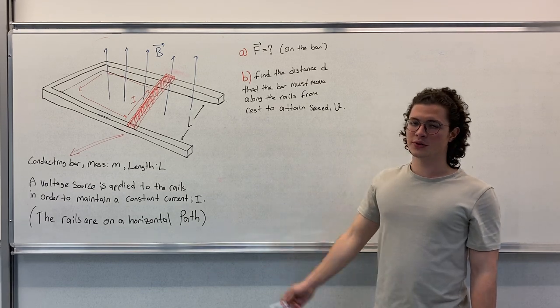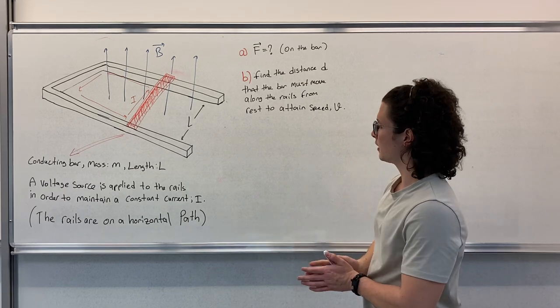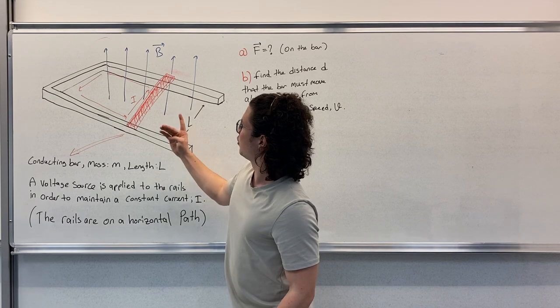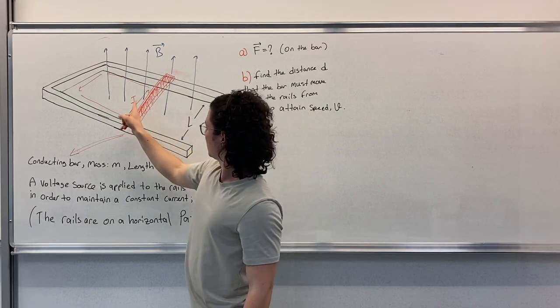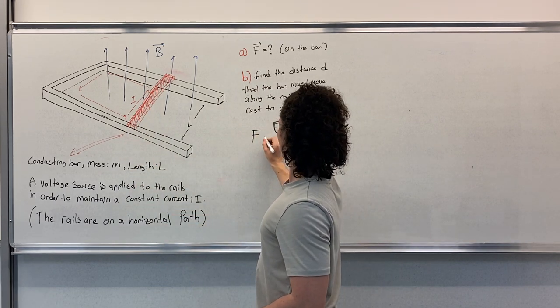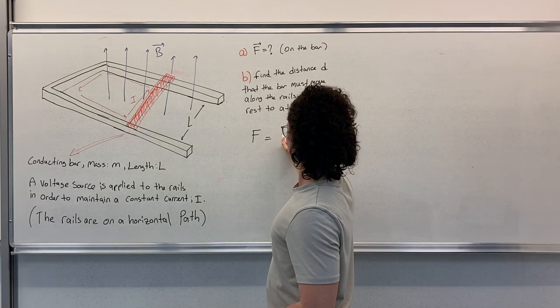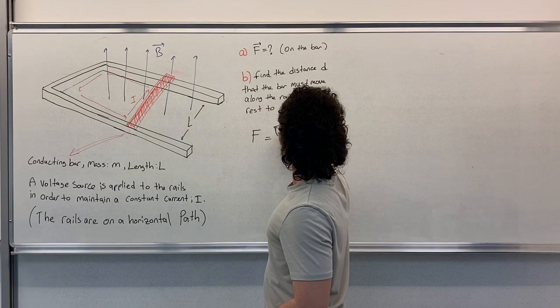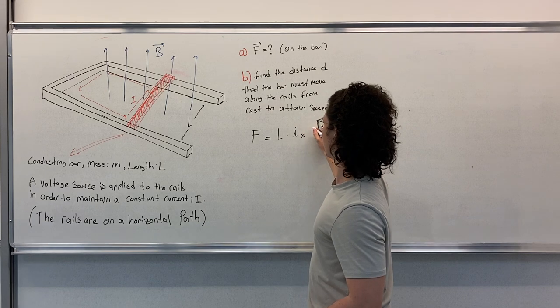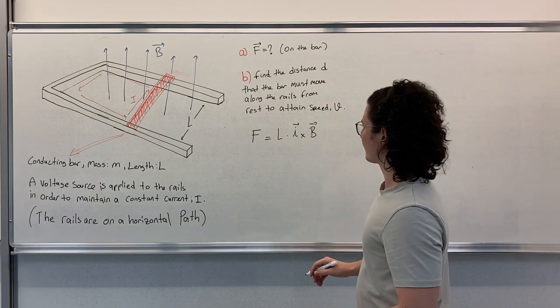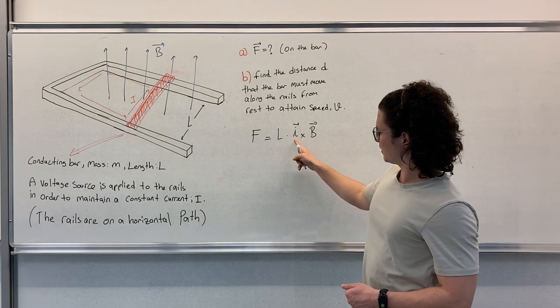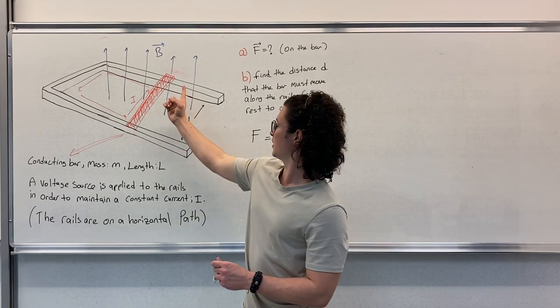If you want to try it on your own, you can pause the video now. I'm starting here. We have a magnetic field pointing up and the current is going like this. We know that the force can be expressed as L times I cross B.